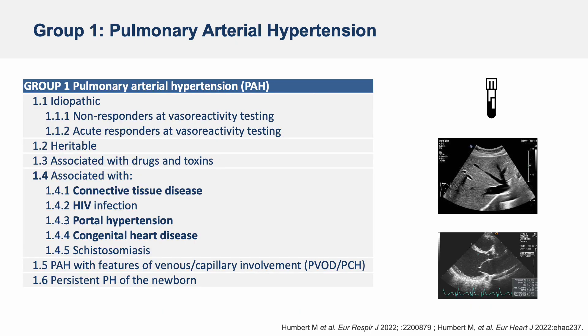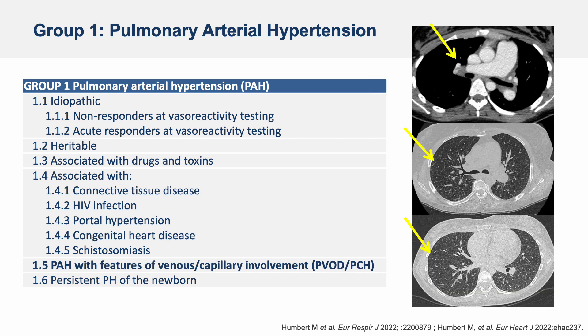PAH can also be a complication of other medical conditions such as congenital heart disease, liver disease, HIV, and connective tissue diseases such as scleroderma or lupus. Finally, pulmonary veno-occlusive disease, also called PVOD, is due to both pulmonary artery and pulmonary venular remodeling. You can observe here on the slide typical signs of PVOD on CT: mediastinal adenopathy, ground-glass opacities, and septal lines, which are quite typical for the specific diagnosis of PVOD.